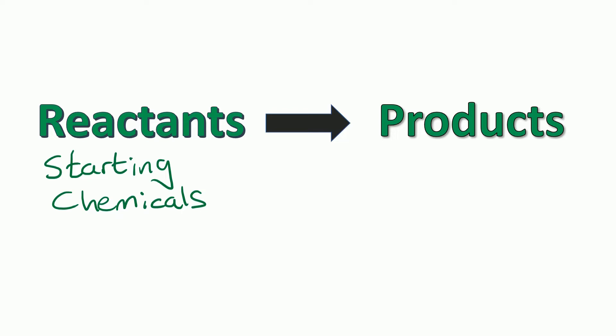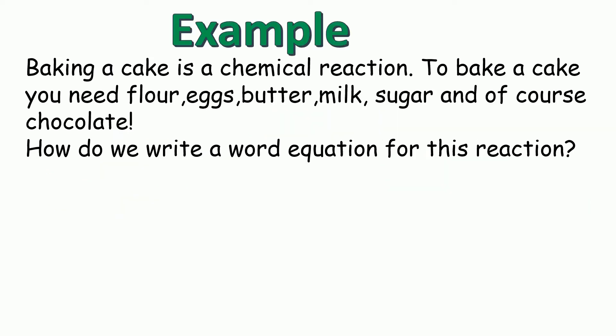Let's do an example together. Baking a cake is a chemical reaction. That's because once you've made the cake you can't get your ingredients back again. So to bake a cake you need flour, eggs, butter, milk, sugar and of course chocolate. So how do we write a word equation for this reaction?